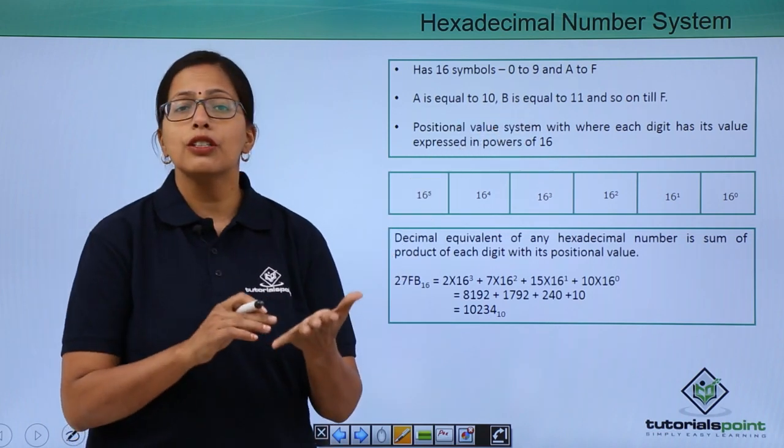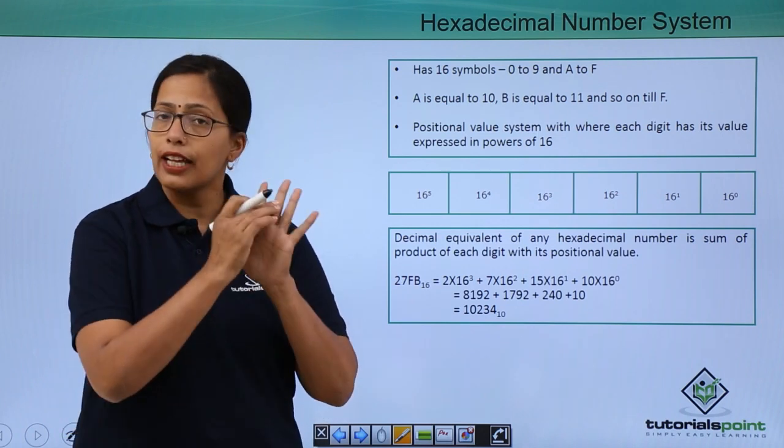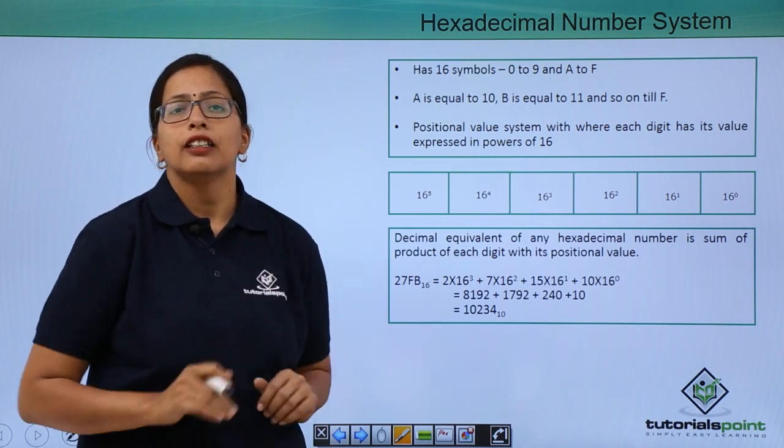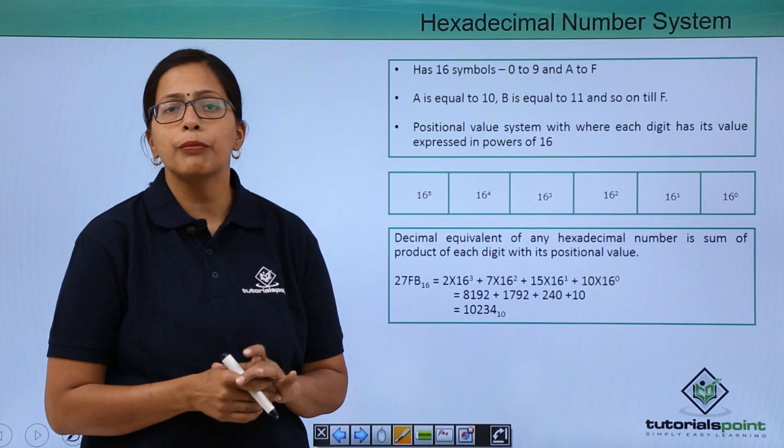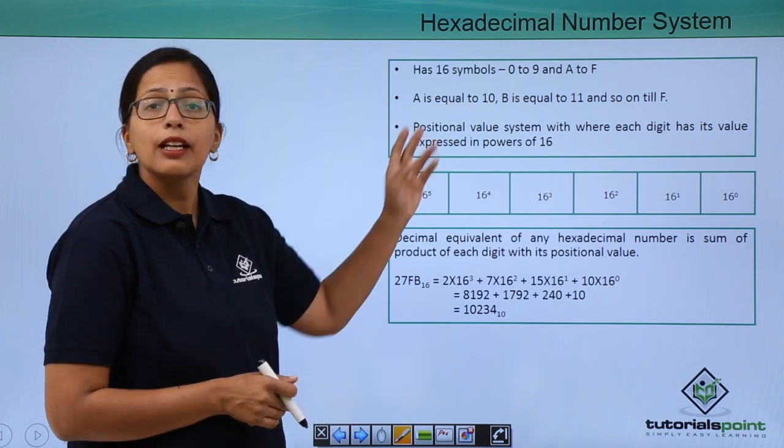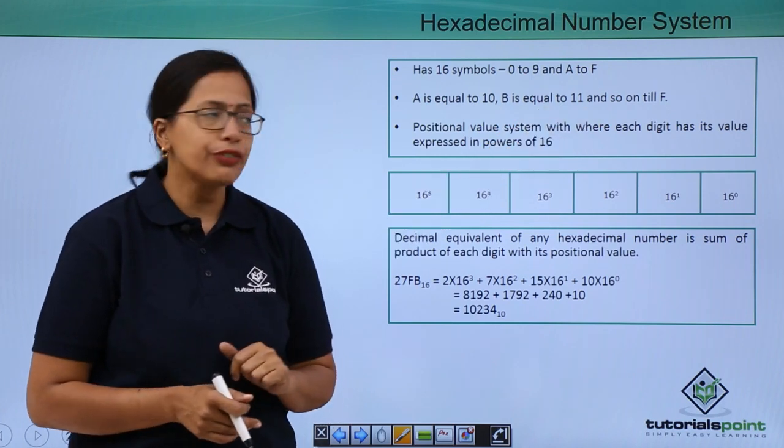So 0, 1, 2, 3, 4, 5, 6, 7, 8, 9, that makes it 10. And then A, B, C, D, E, F. So that is how we come to hexadecimal number system, where A is equal to 10, B is equal to 11 and so on till F is equal to 15.